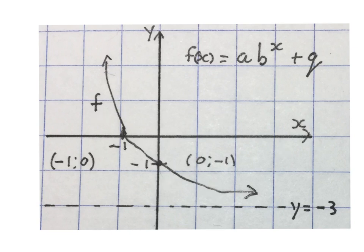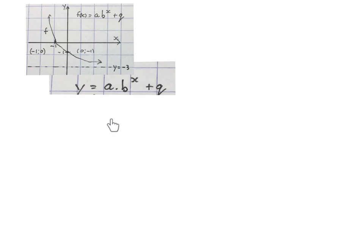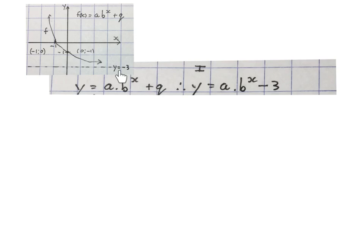The first thing I do is write down the equation with a y. Then I can substitute my y's and x's. The same formula, just with y in front. Because they gave me the asymptote as y = −3, I immediately replace q with −3. Now I have a formula that is easier to work with.